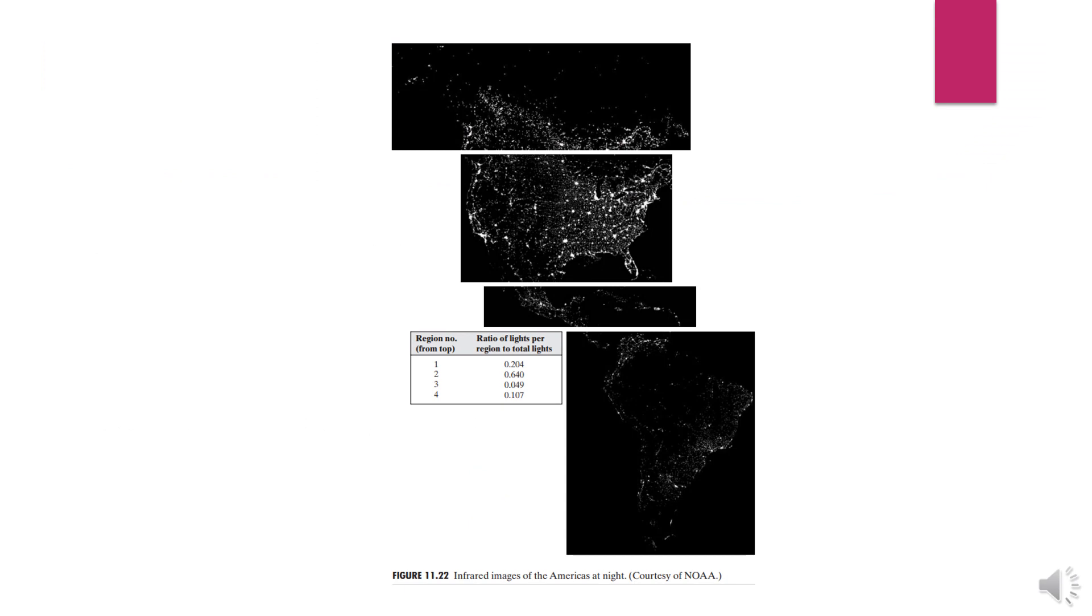The given picture is the satellite image of America. The brightest spots help us in calculating the amount of electricity used approximately. The given table is the ratio of the areas of the bright spots to the total area.